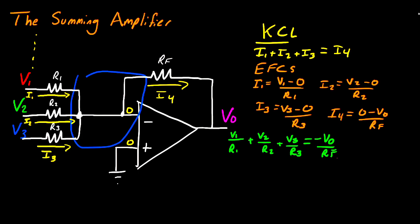So now what I can do is I can multiply the RF and the negative sign over, and I'm left with VO is equal to negative RF multiplied by V1 divided by R1 plus V2 divided by R2 plus V3 divided by R3. And this is the definition of VO in terms of our input voltages and resistances.